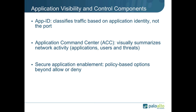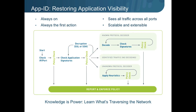These policy options extend far beyond traditional allow or deny. Administrators can securely enable application usage to better the business. Application Visibility and Control with Palo Alto Networks begins with App ID. App ID is a patent-pending traffic classification technology that uses as many as four mechanisms to determine exactly what the application is, and that application identity is used as the basis for all security policies. The key difference between our firewalls and other firewalls is that we make policy decisions based on the application, not solely on the port.